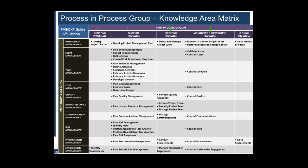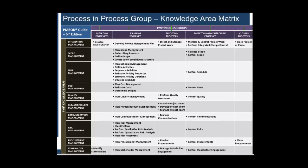If you're looking at this on a smaller screen — on the top in the columns you have the process groups, and on the rows you have the knowledge areas. You can see that there are processes written everywhere. For example, you have 'Develop Project Charter' here, and 'Develop Project Management Plan', and then 'Direct and Manage Project Work'.